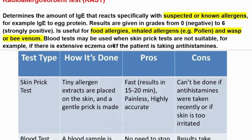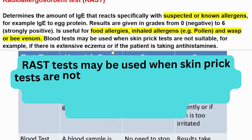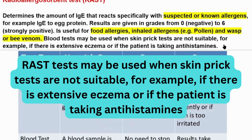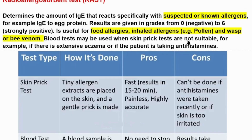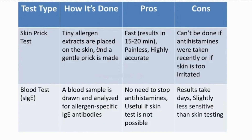Blood tests such as RAST may be used when skin prick tests are not suitable — for example, if there is extensive eczema or if the patient is taking antihistamines. RAST is also useful for inhaled allergens, pollen, and wasp or bee venom in cases where skin prick testing cannot be performed.